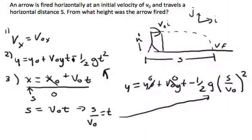And so you can also write this as y = ½g(S²/v₀²) if it's a little nicer that way. And that's all it asks for.